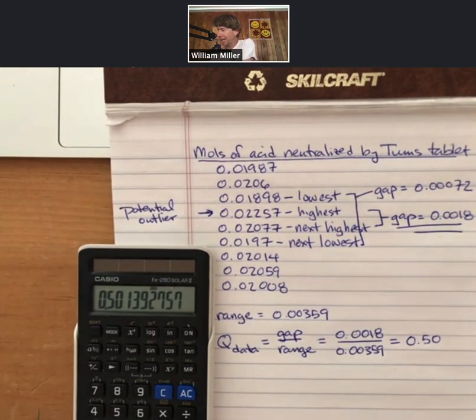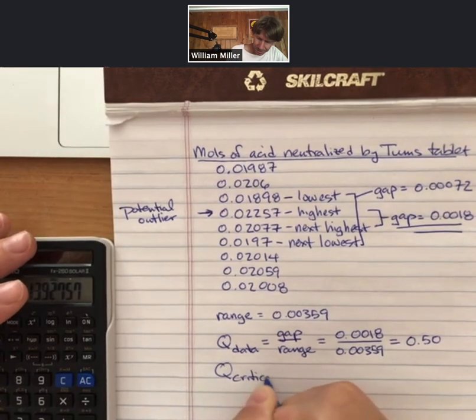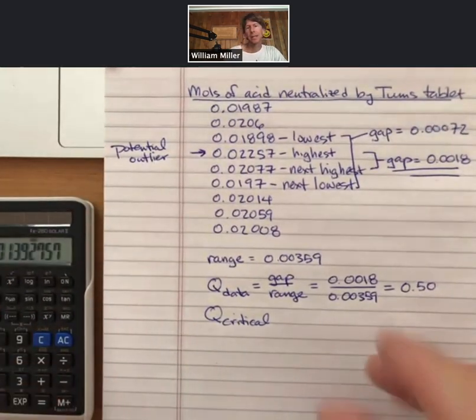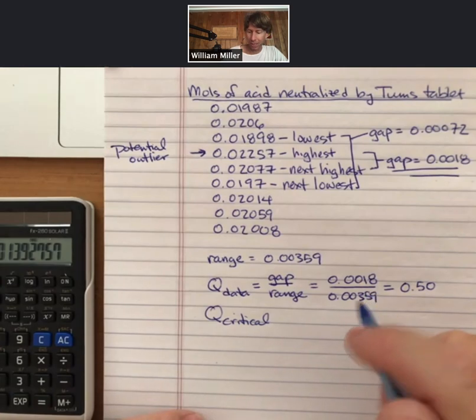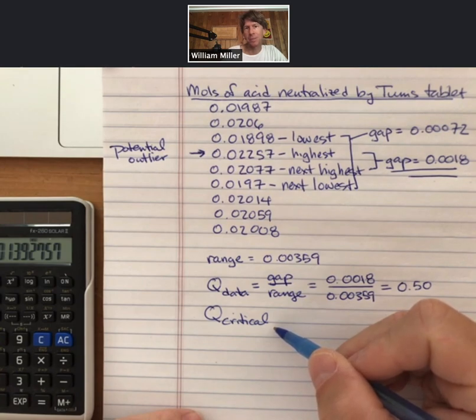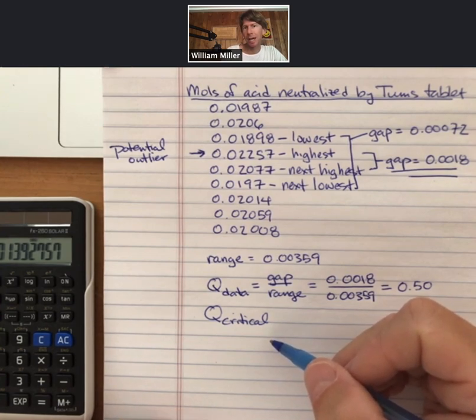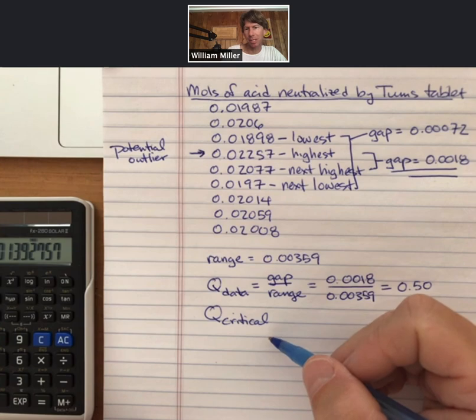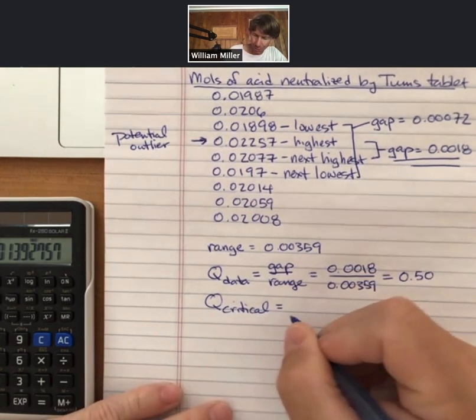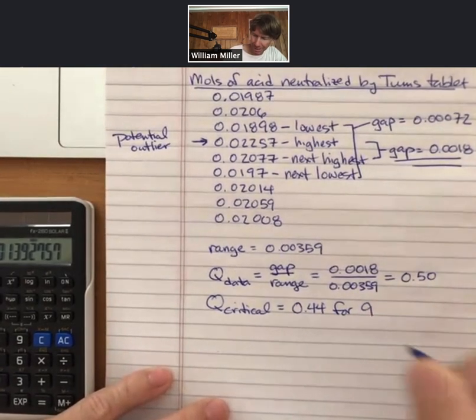From the lab, the lab has in it the actual value of Q critical, which is tabulated. Q critical depends on how many data points you're looking at. The more data points you're looking at, the lower the value of Q critical, and the easier it is to throw out an outlier, to have one point that you're more than 90% confident is a bad data point in this data set. So Q critical is 0.44 for nine pieces of data.